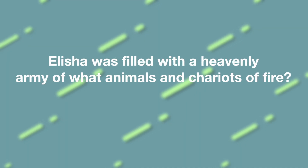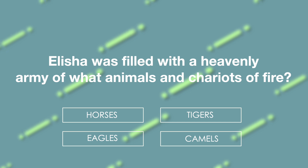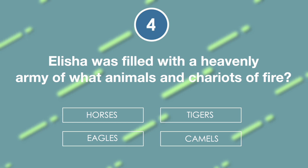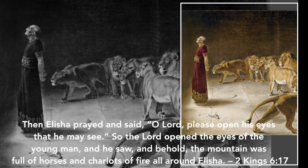Elisha was filled with a heavenly army of what animals and chariots of fire? Is it horses, tigers, eagles, or camels? The answer is horses. 'Then Elisha prayed and said, O Lord, please open his eyes that he may see. So the Lord opened the eyes of the young man, and he saw, and behold, the mountain was full of horses and chariots of fire all around Elisha.' 2 Kings 6:17.